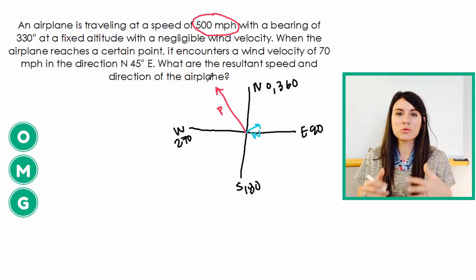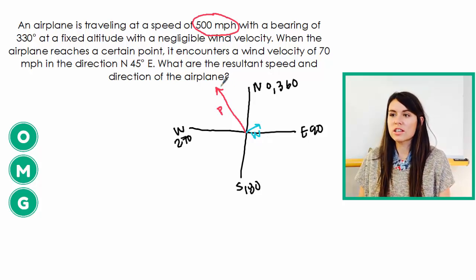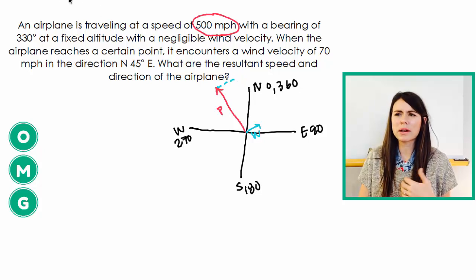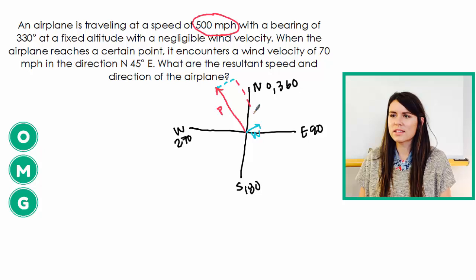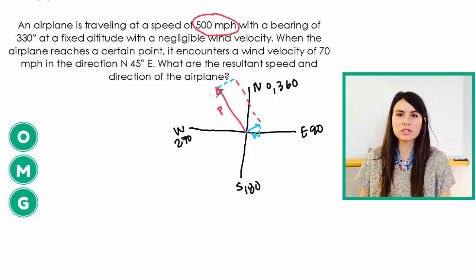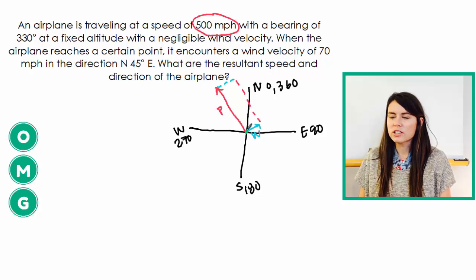So how we represent resultant vectors is we draw in a parallelogram. I like to draw in the parallelogram versus the heads to tails. Draw in a parallelogram and then in green I'm going to draw the resultant vector.